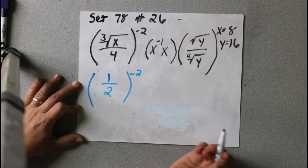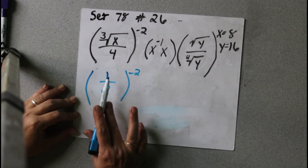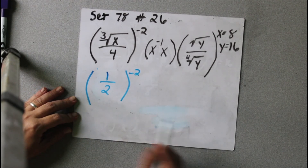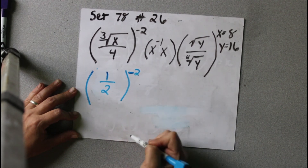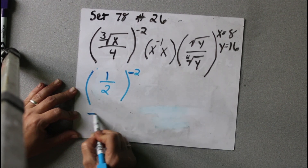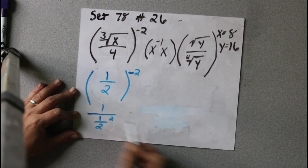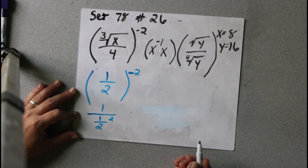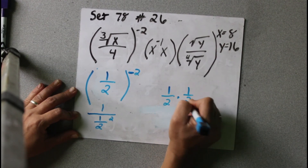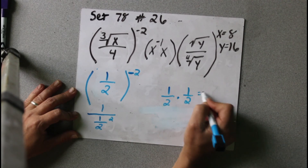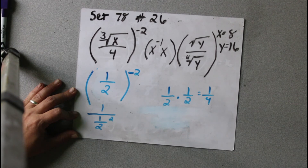And that's to the negative 2. So to get rid of that, we're going to move this to the bottom of a fraction with 1 over the top. To get rid of a negative exponent, we move it to the bottom. So we put 1 at the top and 1 half squared at the bottom. What is 1 half squared? That's 1 half times 1 half: 1 times 1 is 1, 2 times 2 is 4. So it's 1 fourth. 1 half squared is 1 fourth.